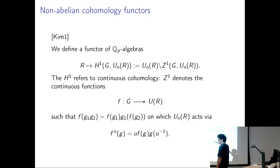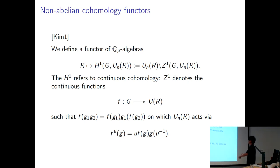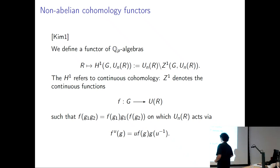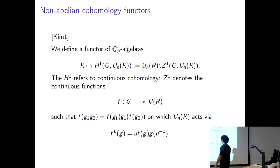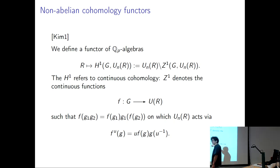Sometimes I write U, sometimes U sub N, depending. We'll mostly be interested in this specific finite-dimensional quotient U sub N, but sometimes I consider U all at once. These are continuous functions satisfying the cocycle condition, modulo the equivalence relation given by the points of U that sends a cocycle to a kind of twisted conjugate cocycle. The most important thing — which ends up being elementary but was tricky when I first thought about it — is what I mean by continuous, and also what I mean by the Galois action on this for QP algebra R. The action on R is trivial.